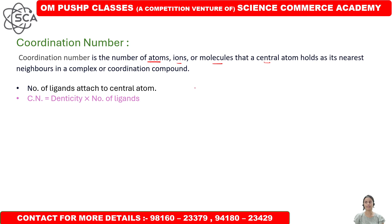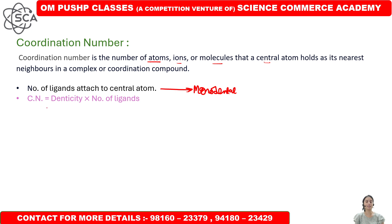If we have monodentate ligands, then the number of ligands attached to the central atom gives us the Coordination Number. But if the ligand is di-dentate, tri-dentate, or poly-dentate, then we have to calculate the Coordination Number.